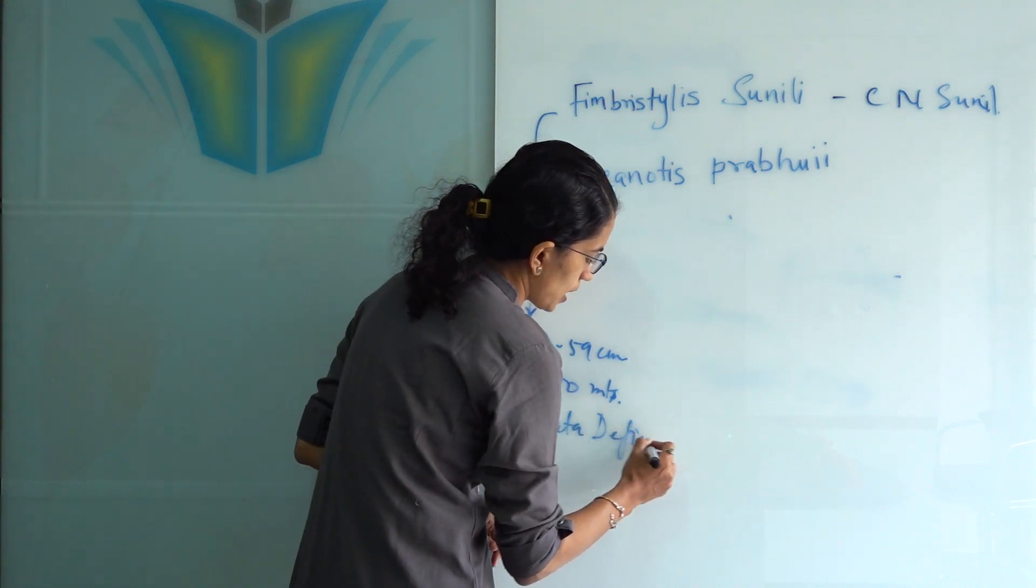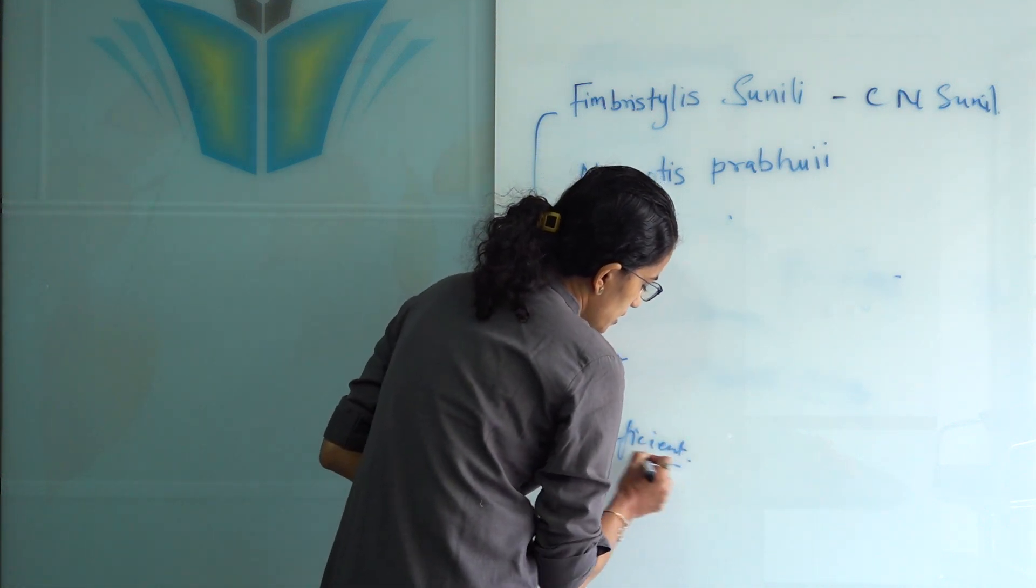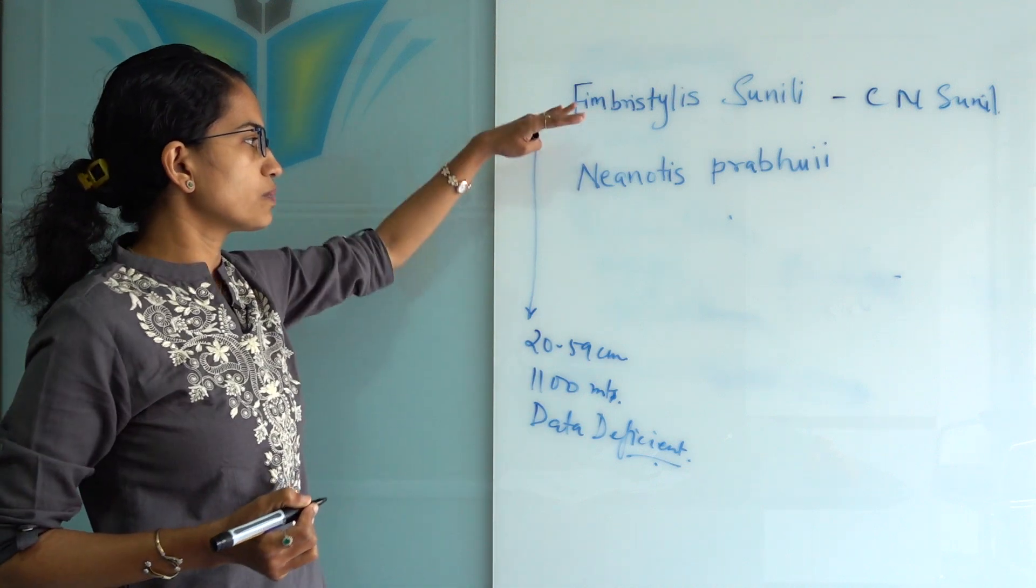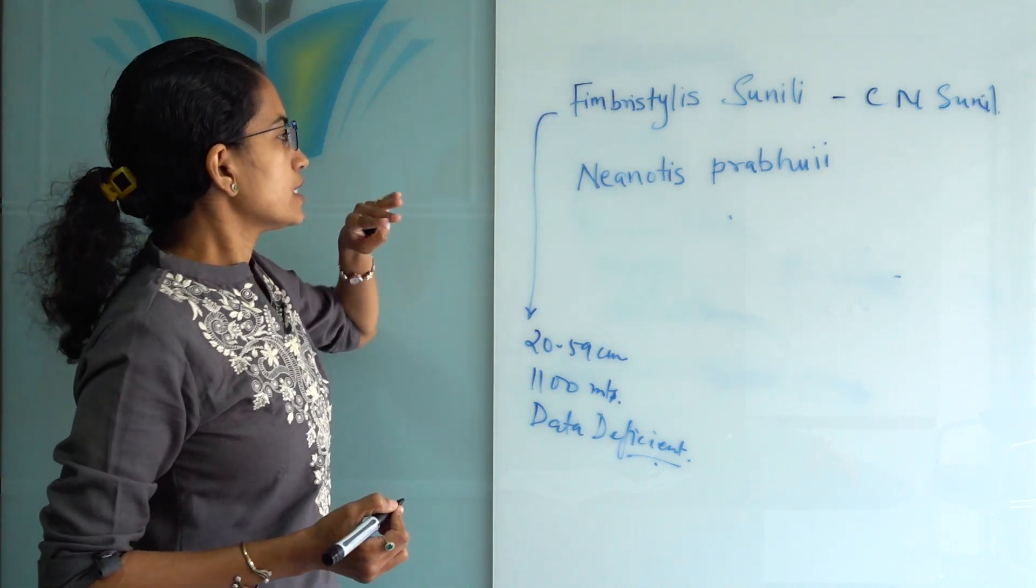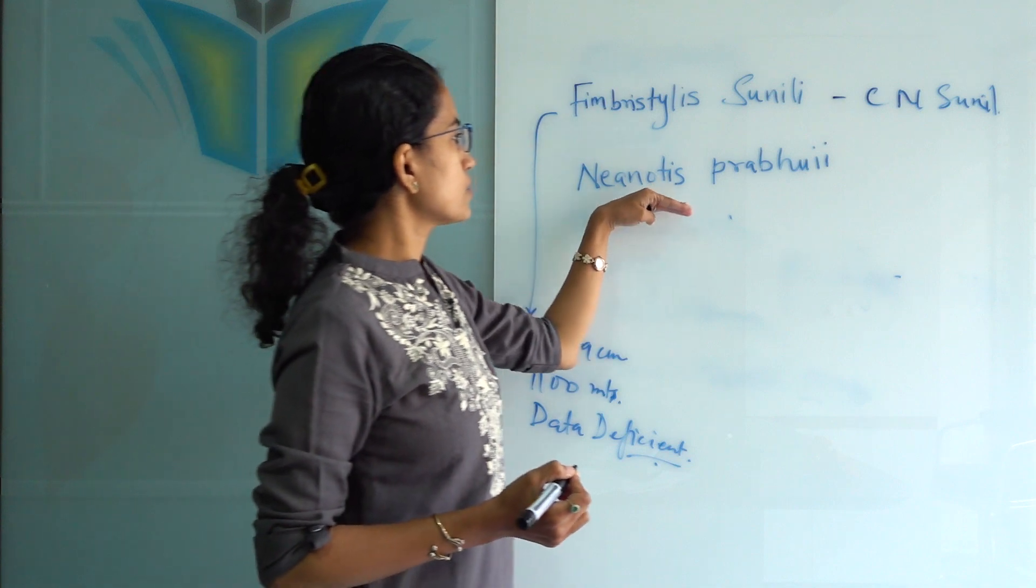In the data deficient category of the IUCN classification, still a lot of information about this species needs to be embarked. The next important species is Neonotus prabhai.